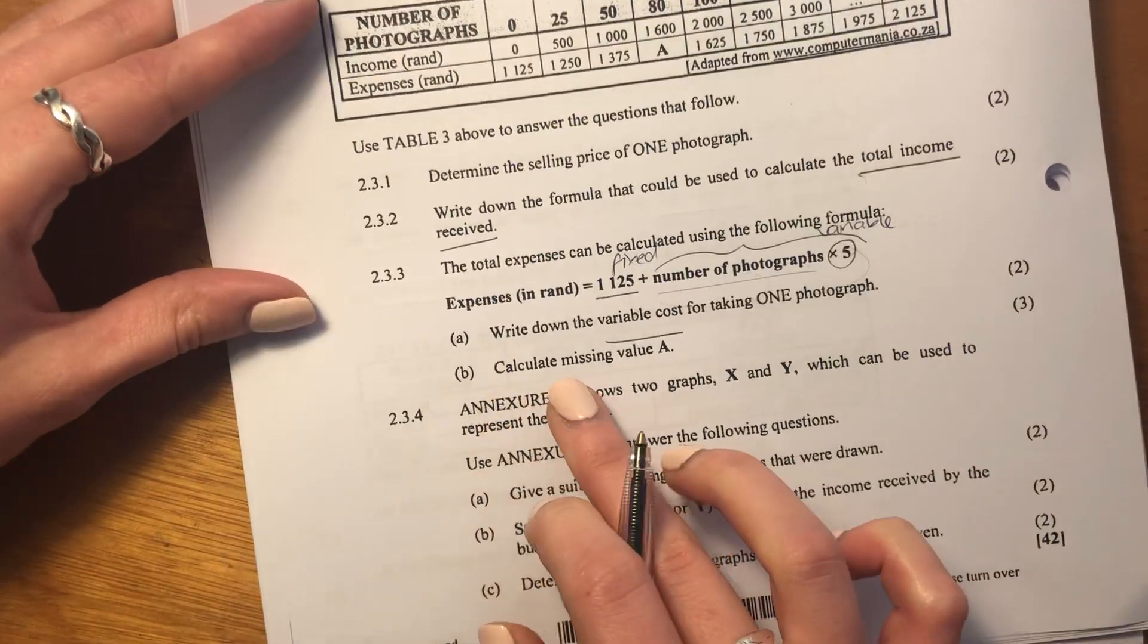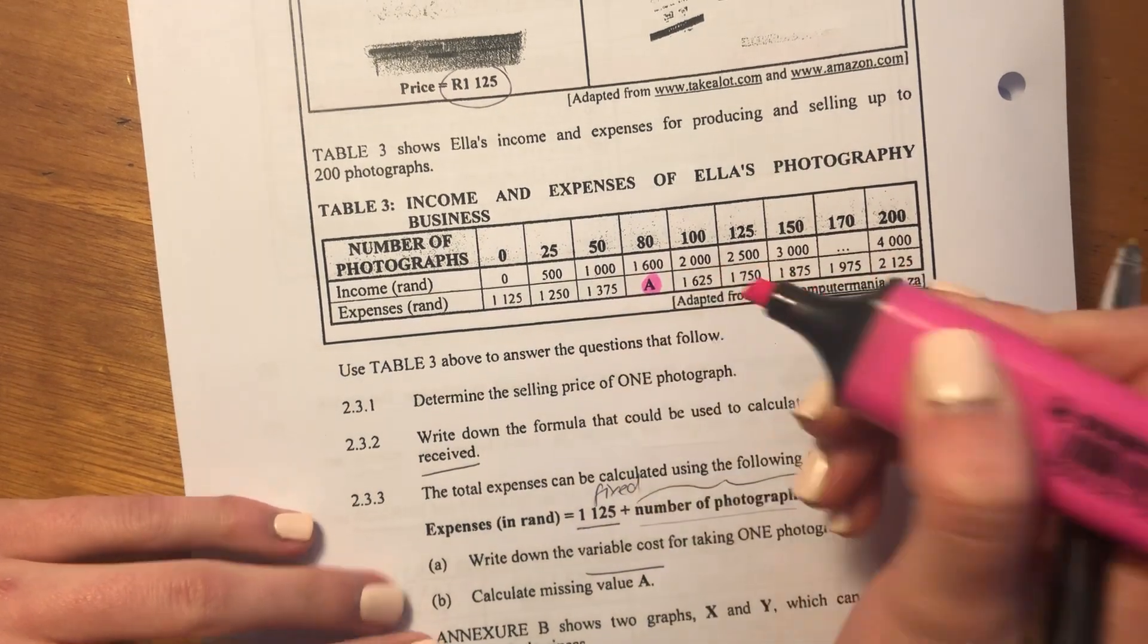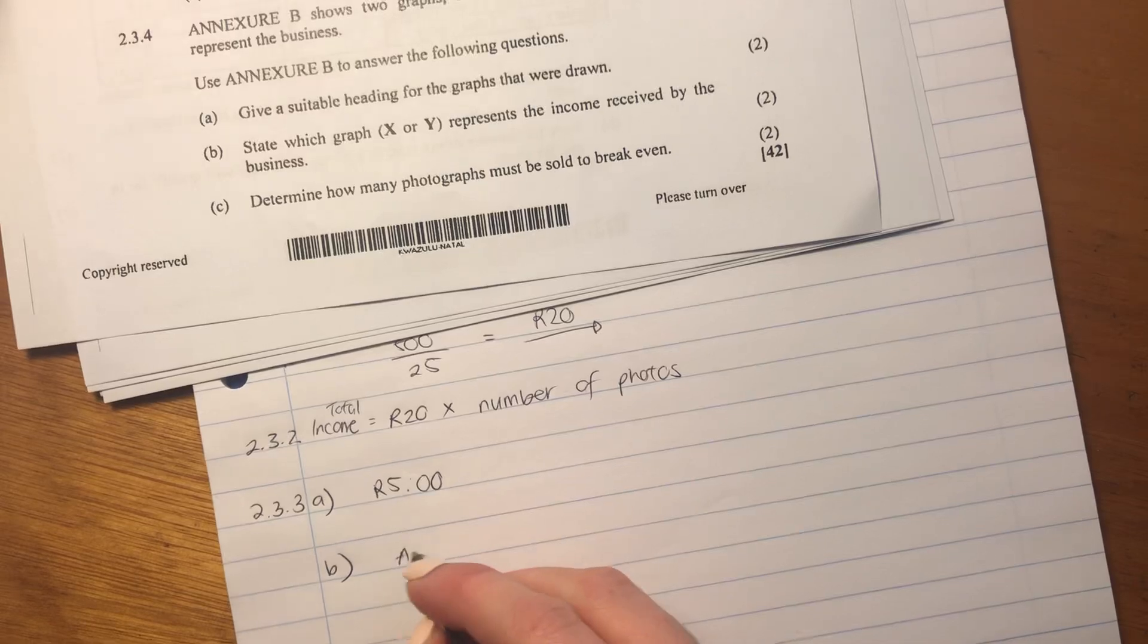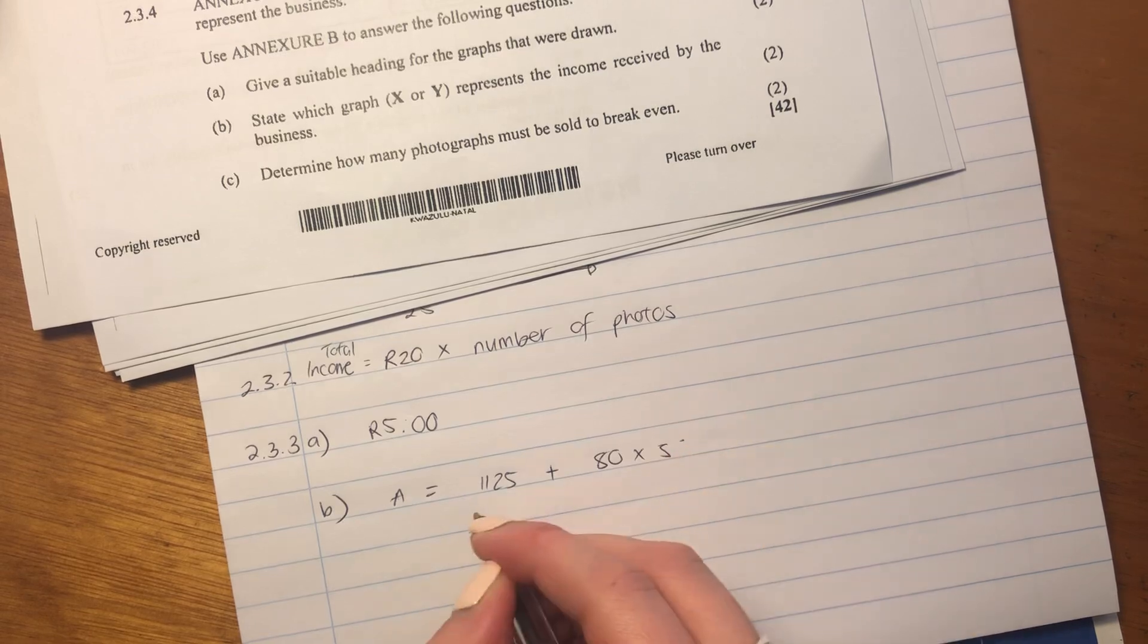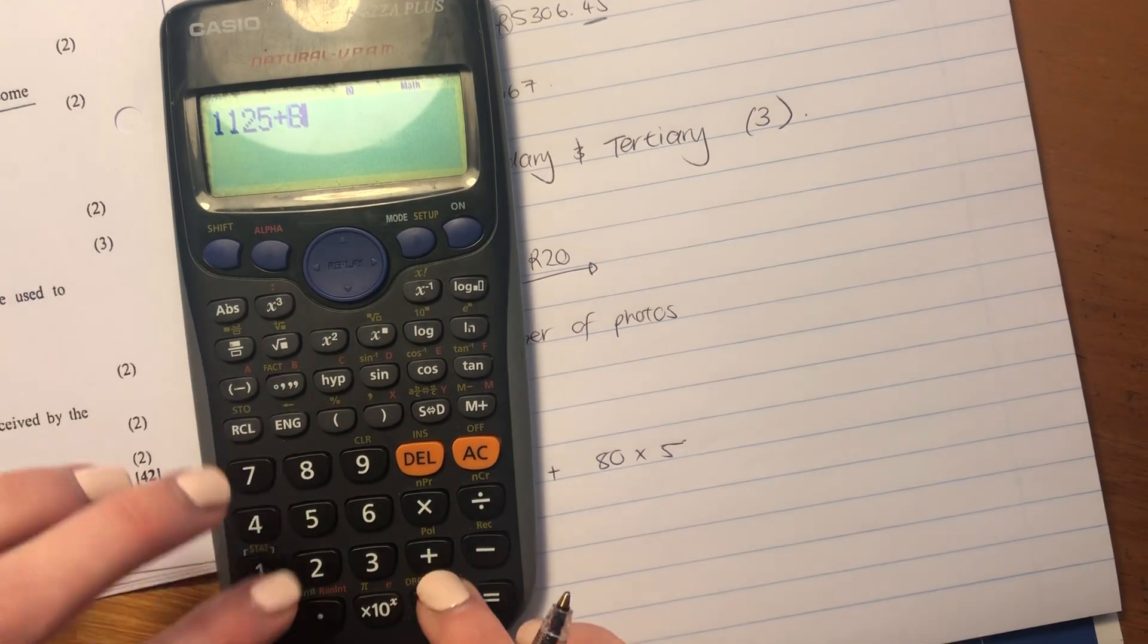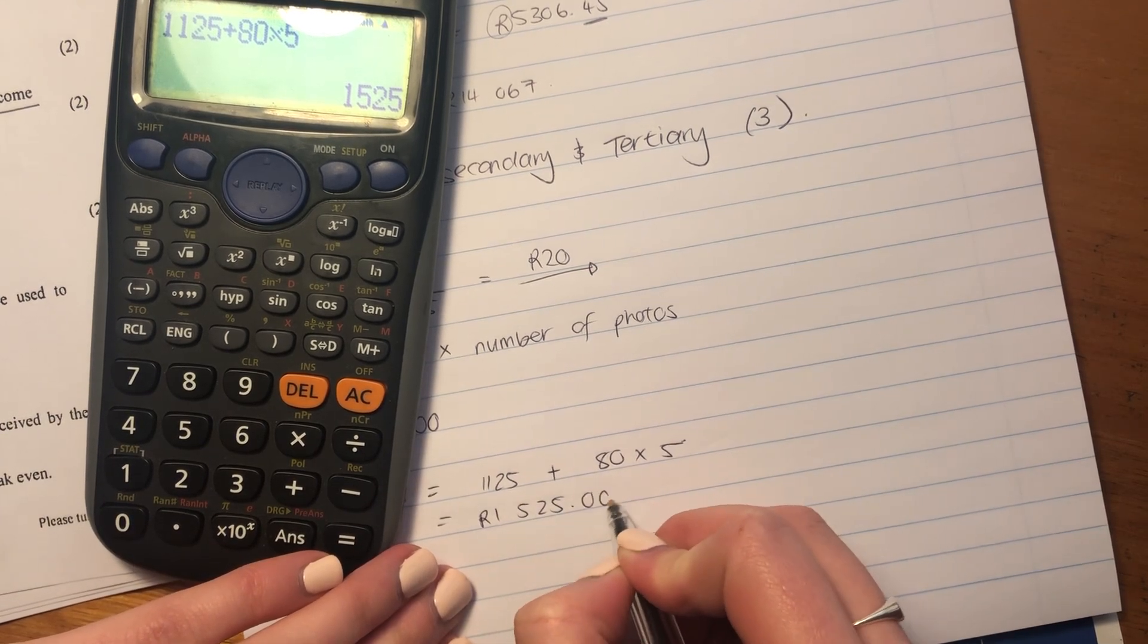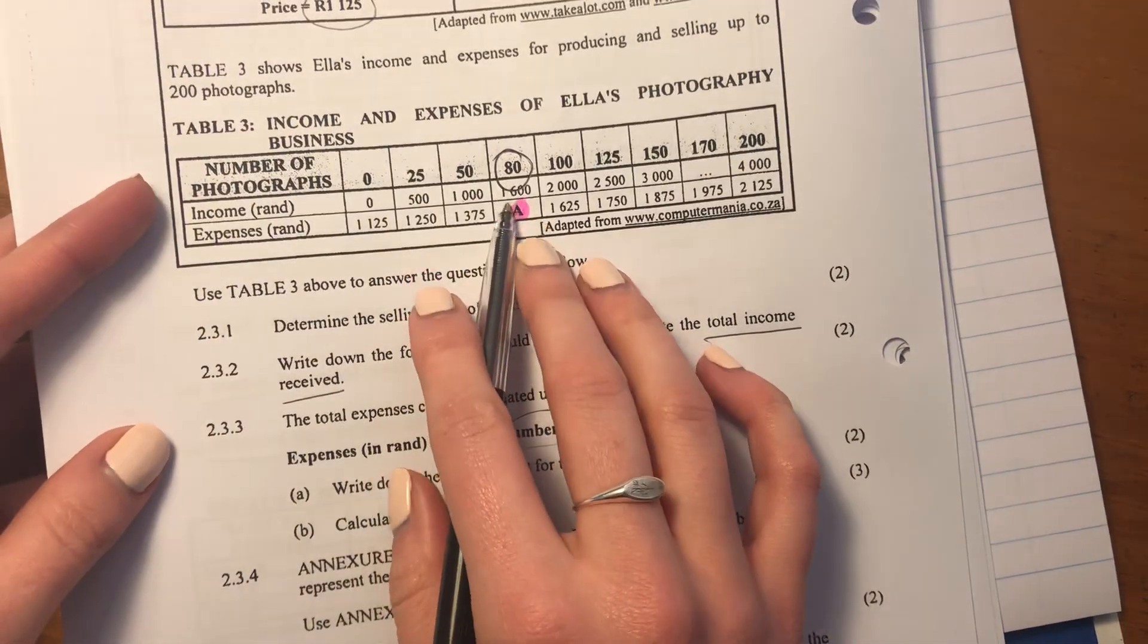Then it says calculate the missing value A. Now, the best thing to do is to find A. So A is over here. So we know that the number of photographs at this point is 80. So we're going to use our formula. We're going to say A equals 1,125 plus 80 times by 5. Oh, that's a very interesting 5. Okay, put that in your calculator. Remember, the biggest thing here is type it in correctly. So the total amount that this will cost is 1,525 rand. So that is what A is. A is the expense when there are 80 photographs.